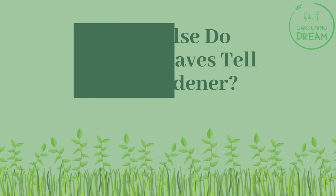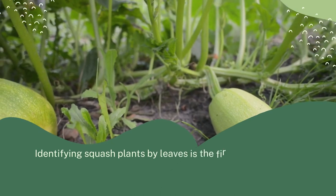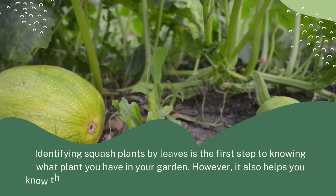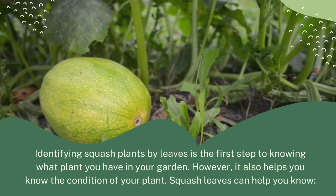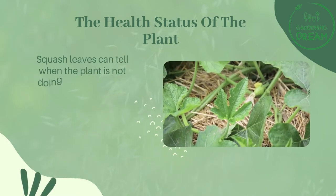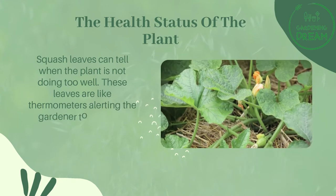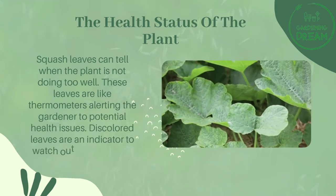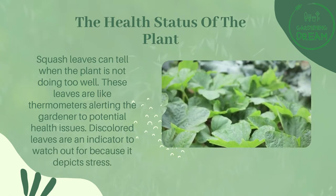What else do squash leaves tell the gardener? Identifying squash plants by leaves is the first step to knowing what plant you have in your garden. However, it also helps you know the condition of your plant. Squash leaves can help you know the health status of the plant — they are like thermometers alerting the gardener to potential health issues. Discoloured leaves are an indicator to watch out for because it depicts stress.